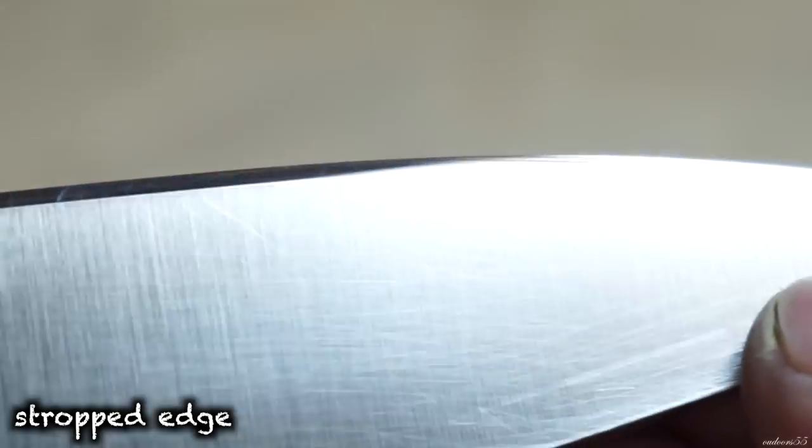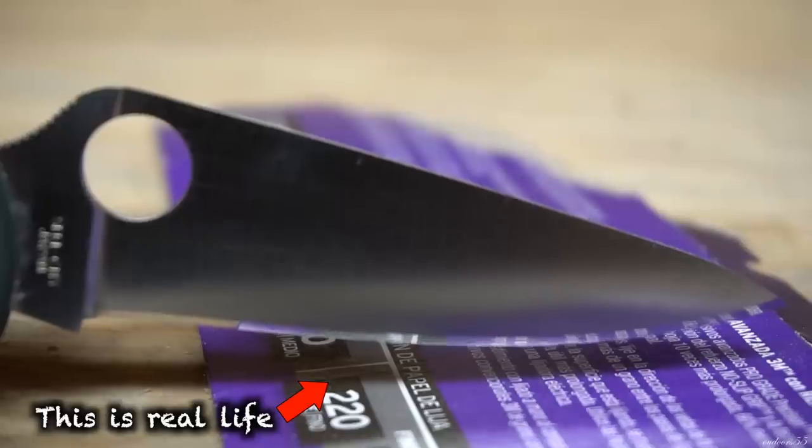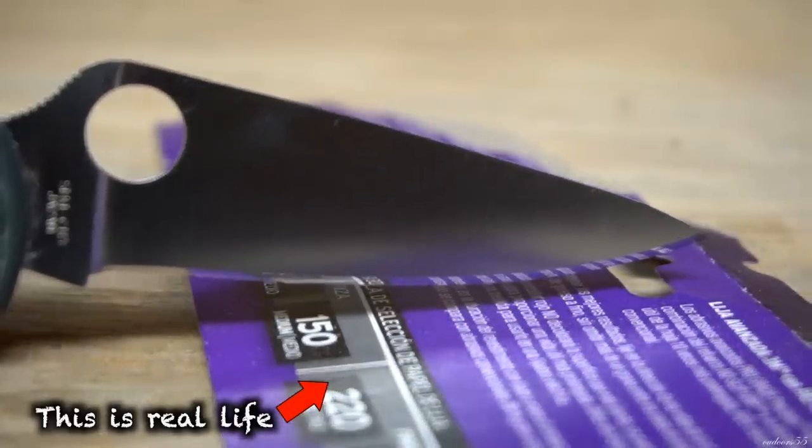And here's what the edge looks like after stropping and you can still see some of those coarse grit scratches coming through. But in real life this is an absolute mirror polish and you cannot see any of those scratches with the naked eye.